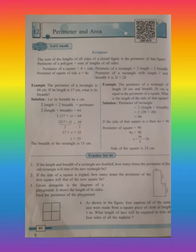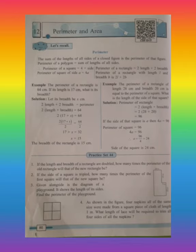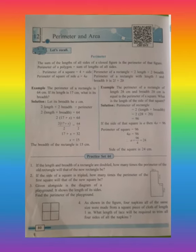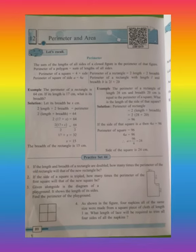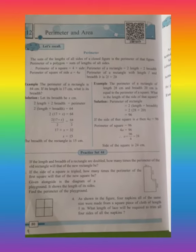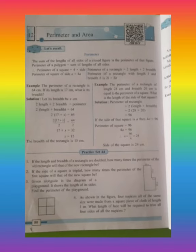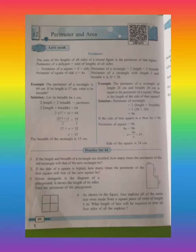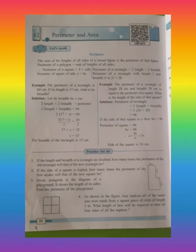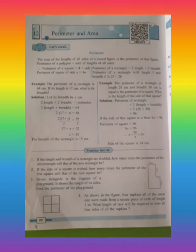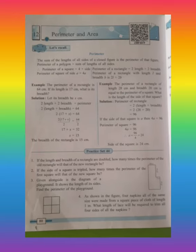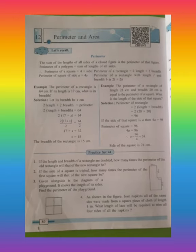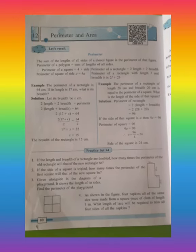Namaste students, welcome to all of you. Today we are going to learn the next new topic — Topic Number 12: Perimeter and Area. You already know well what is meant by perimeter and what is meant by area. Perimeter is the sum of the length of all sides of a closed figure.